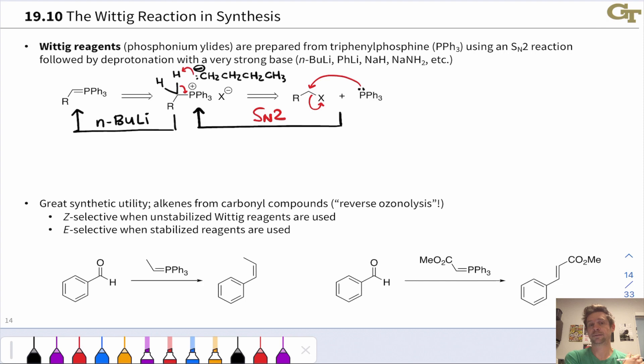Now because this synthesis of the phosphonium ylid relies on an SN2 reaction, primary alkyl halides or methyl halides work best in this process. Secondary halides you may run into problems with elimination or slow reaction and tertiary alkyl halides are going to react very slowly in this substitution process.